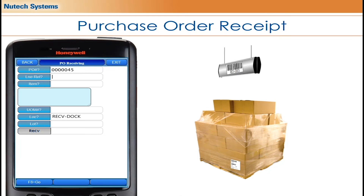If you'll be using the same receiving location 100% of the time, we can set that as the default and even hide it off the screen completely to make it less complicated for the user. This is especially useful for new people who may not know if the button is necessary. The software is versatile, so you can open any button with a question mark. If you have multiple receiving docks, you have the option of clicking that button or scanning the specific location.